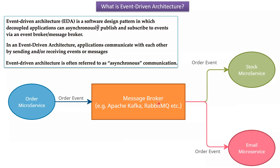Here you can see a message broker. Examples of message brokers are Apache Kafka, RabbitMQ, etc. Here you can see the order microservice. Whenever an order is created, an order event will be created and that order event will be published to the message broker. And here you can see the stock microservice and the email microservice.